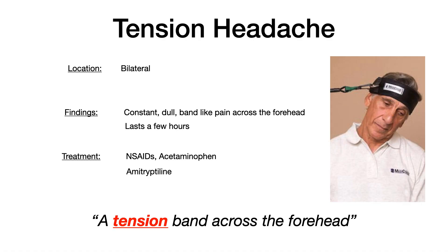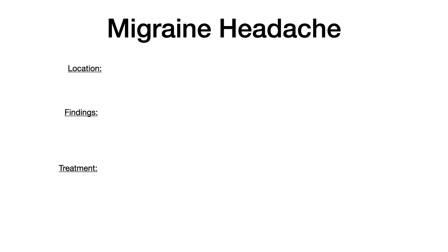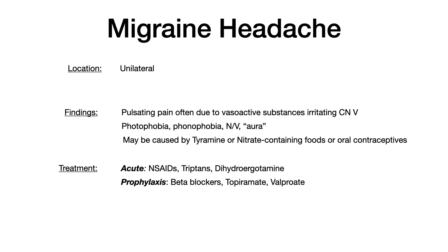Tension headaches are the only bilateral headache, so that's the main feature to know. Now let's talk about migraines, our first unilateral headache. Migraines are unilateral pulsating pain often due to the release of vasoactive substances which irritate cranial nerve 5. Remember it's unilateral, the pain is due to irritation of cranial nerve 5 due to vasoactive substances. Clinical symptoms include photophobia, phonophobia, nausea, vomiting, and an aura — so patients often sense the migraine is coming ahead of time.